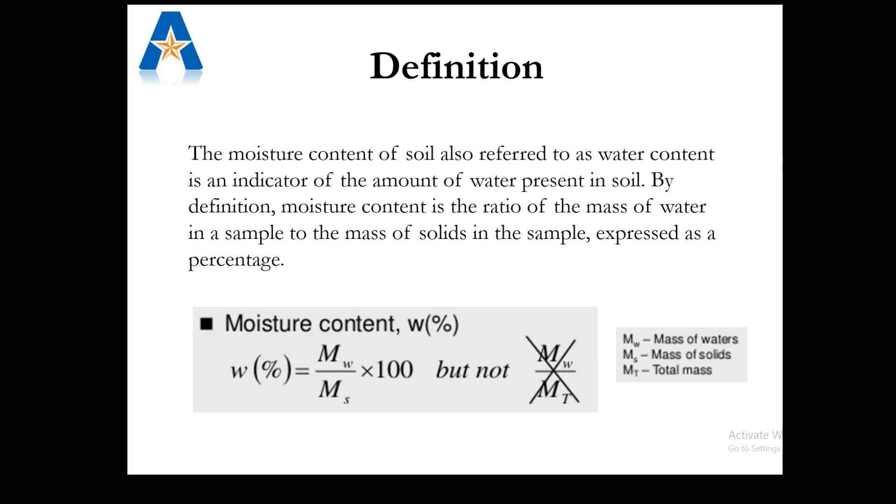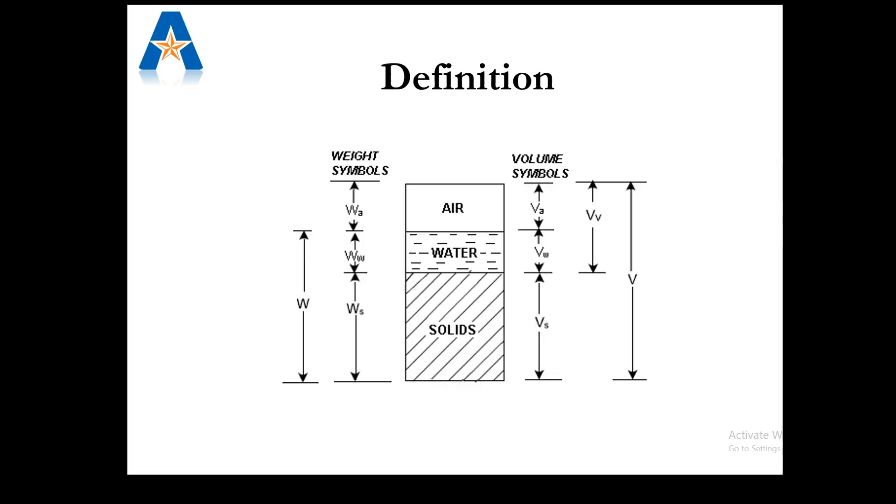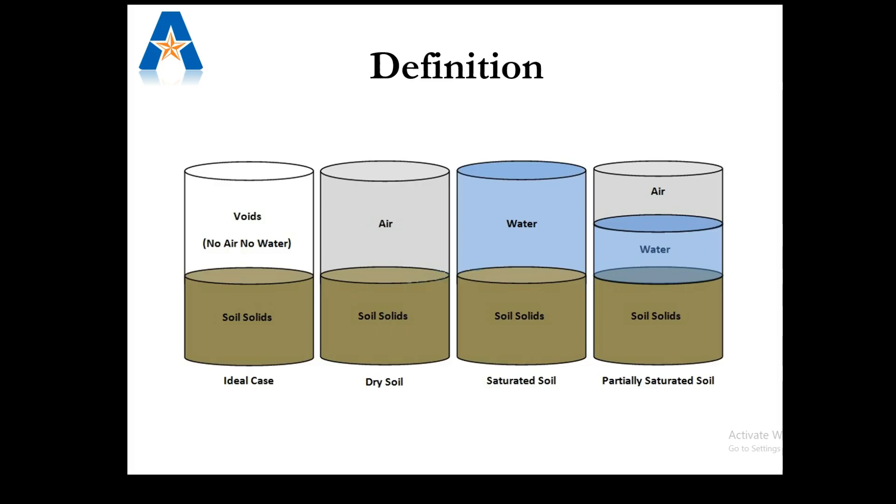The moisture content can be defined as the percentage of water present in the soil. It is the ratio of the mass of water to the mass of solids in a given soil sample. This definition can be easily understood from the phase diagram of soil by dividing the soil into three phases. Moisture content is the weight of water divided by the weight of soil solids. Moisture content will be zero if the soil is completely dry; for saturated soil, moisture content will be very high.